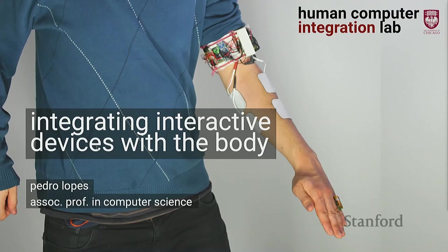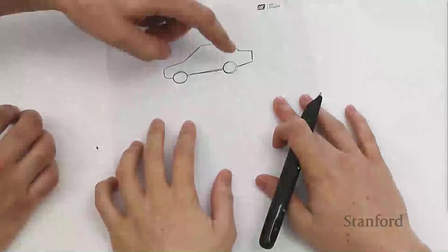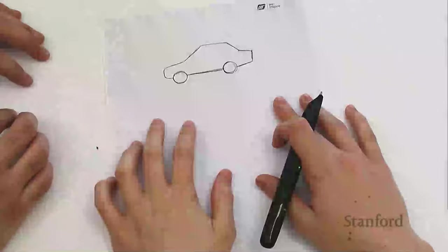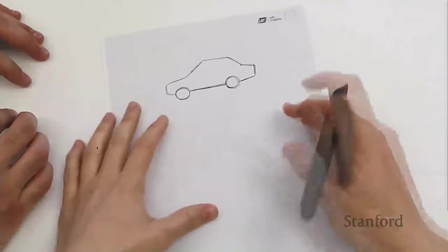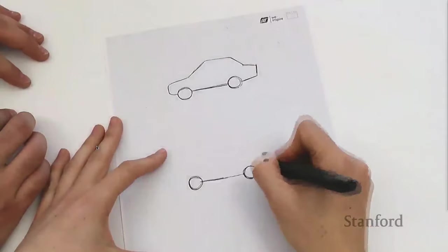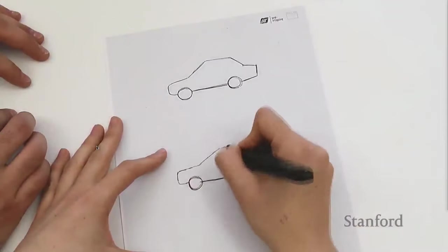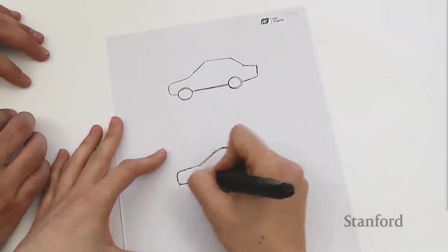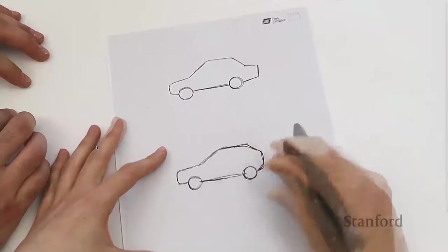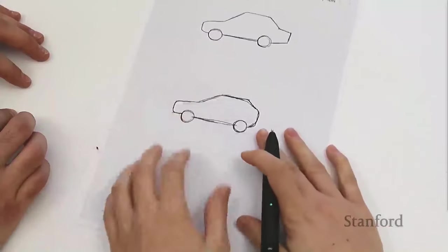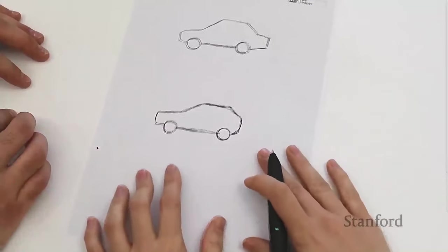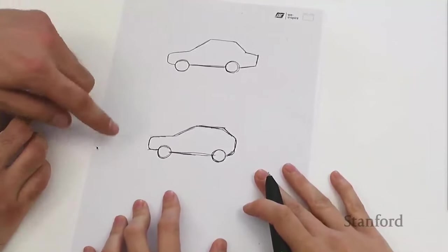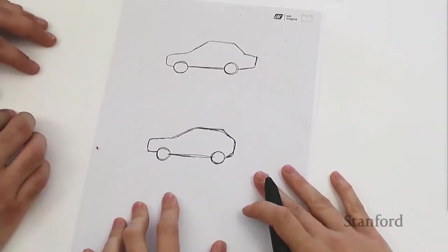Before it gets too abstract and we start debating what I mean exactly by 'integration,' I want to show you one quick example. This is an older work of mine called Muscle Plotter. What you see here are two car designers doing what they do best — sketching and figuring out which of two car shapes is the most aerodynamic.